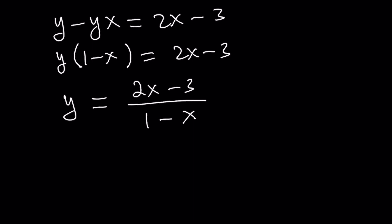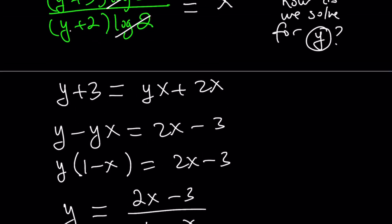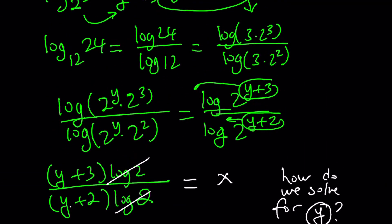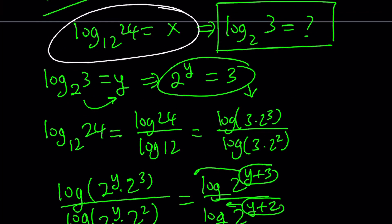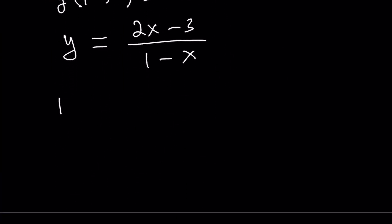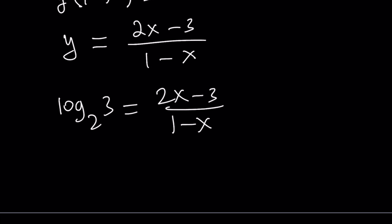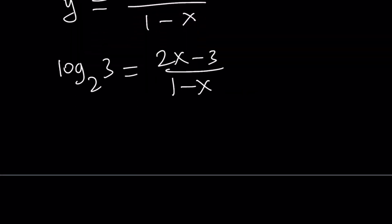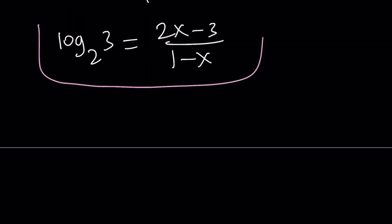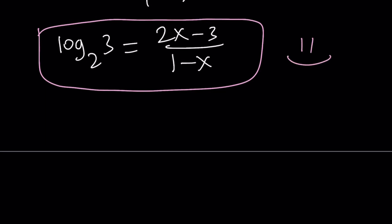Our goal was to solve for y, and y is log 3 with base 2 — that's what we called y. So log 3 with base 2 equals 2x minus 3 divided by 1 minus x, which is what we were trying to find in terms of x. This brings us to the end of this video. Thank you for watching — I hope you enjoyed it. Please comment, like, and subscribe, and I'll see you tomorrow with another video.